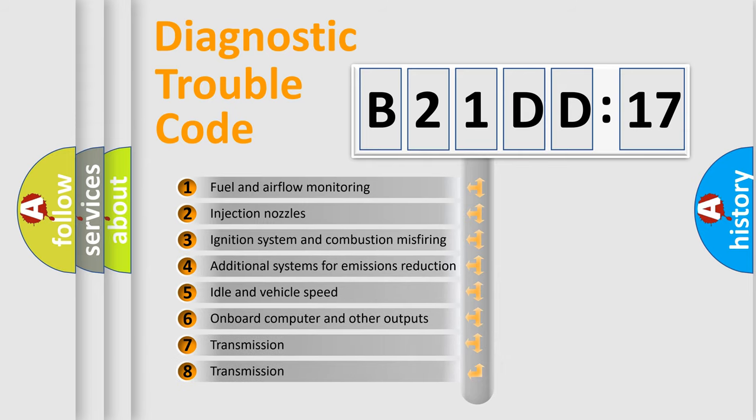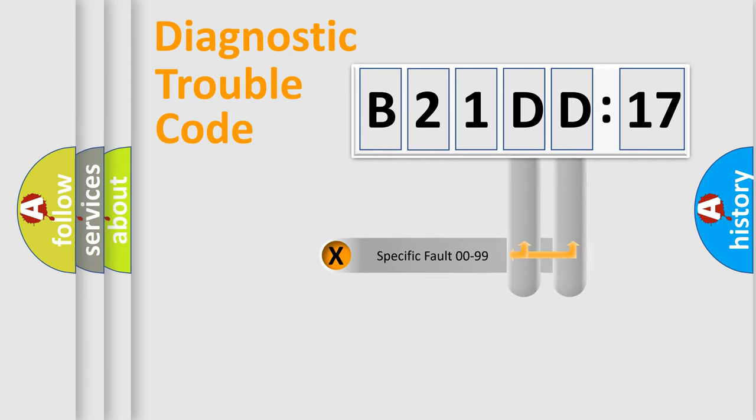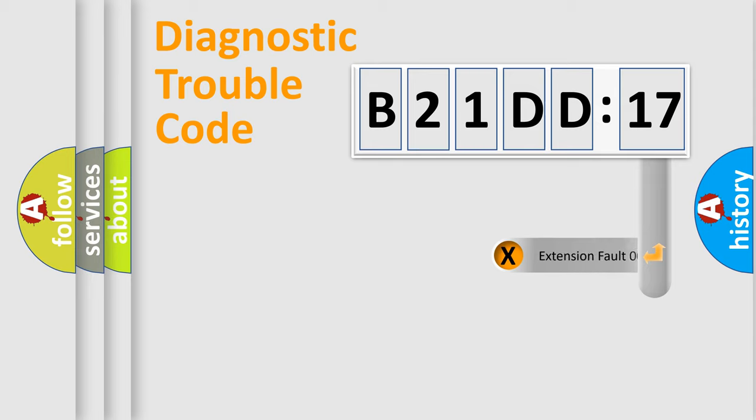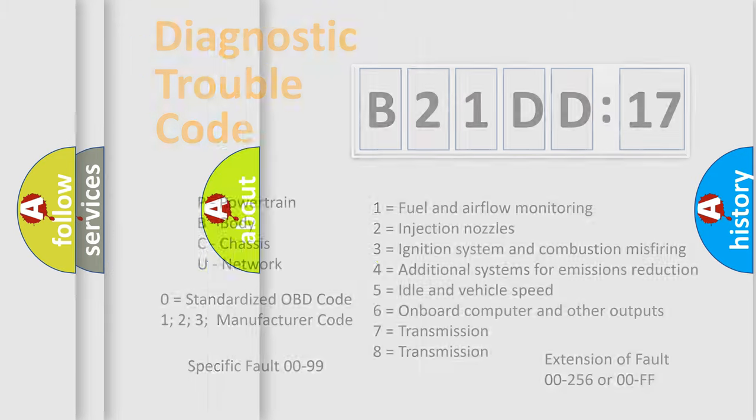The third character specifies a subset of errors. The distribution shown is valid only for the standardized DTC code. Only the last two characters define the specific fault of the group. The add-on to the error code serves to specify the status in more detail, for example, a short to ground. Let's not forget that such a division is valid only if the second character code is expressed by the number zero.